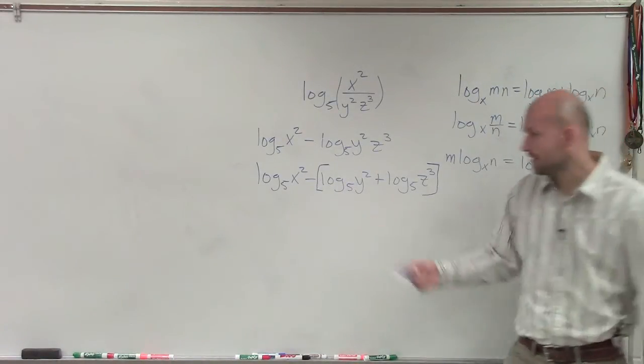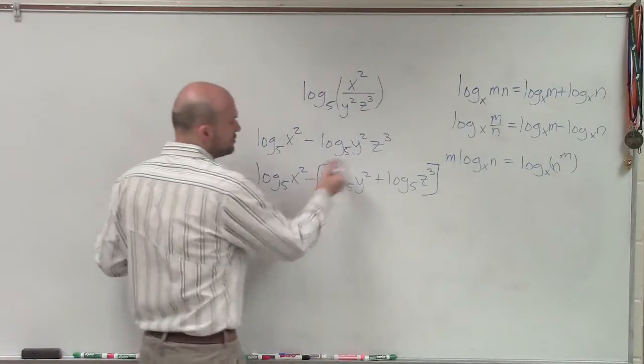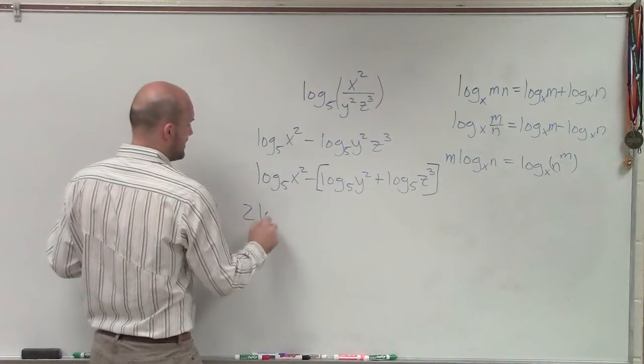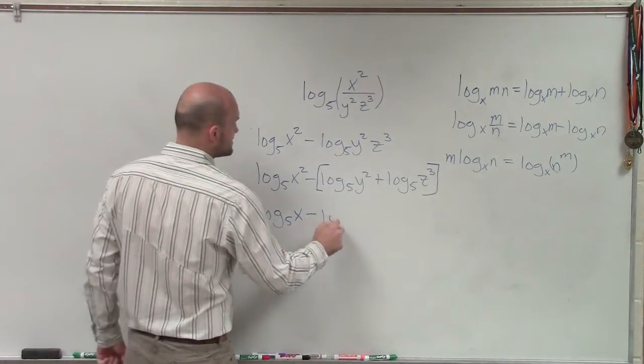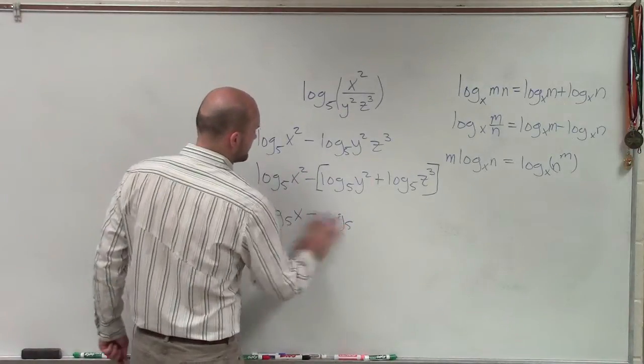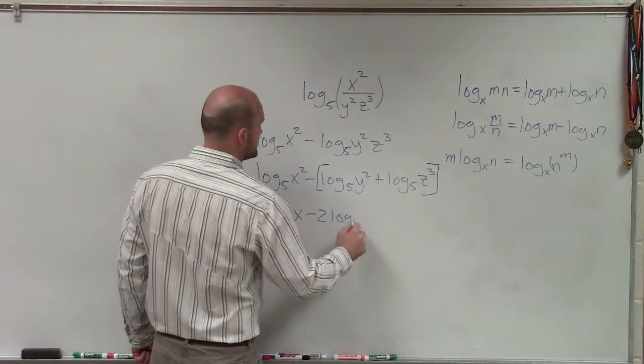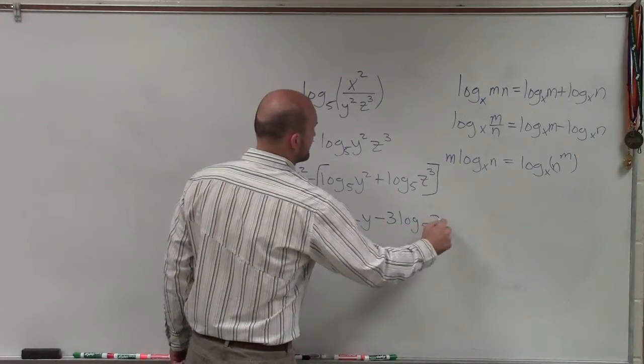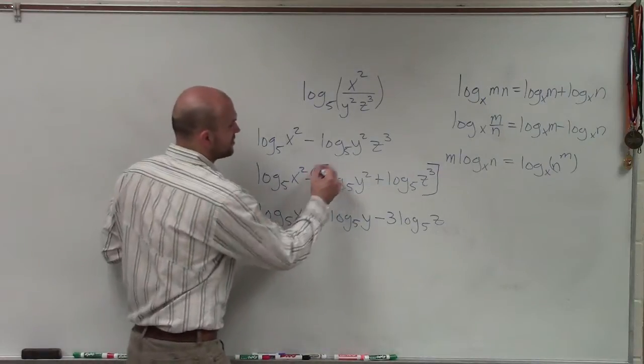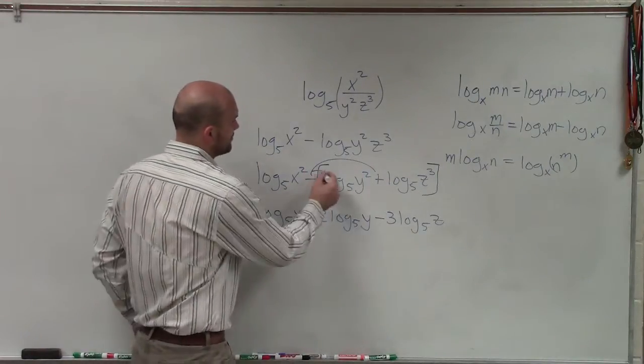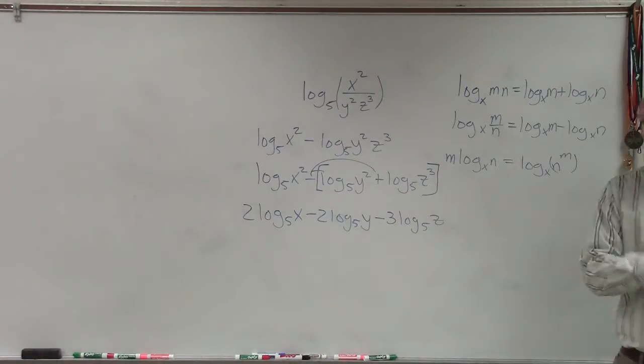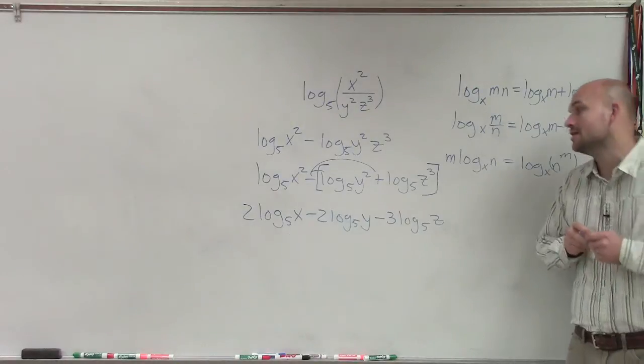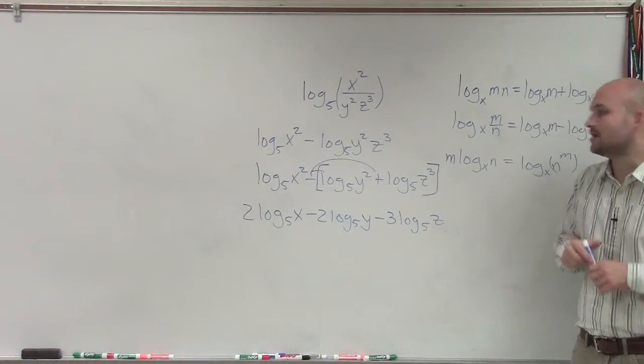Then you can apply distributive property if you'd like to, and then take each one of these exponents and bring them down front. So your final answer could have been log base 5 of x minus, I'm sorry, 2 log base 5 of x minus 2 log base 5 of y minus 3 log base 5 of z. See, what I did is I applied the distributive property to both of my logarithms. Because you're subtracting both of them. So your final answer when you bring down the exponent is 2 log base 5 of x minus 2 log base 5 of y minus 3 log base 5 of z.